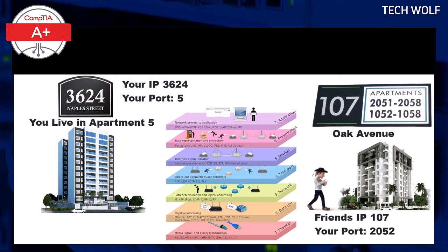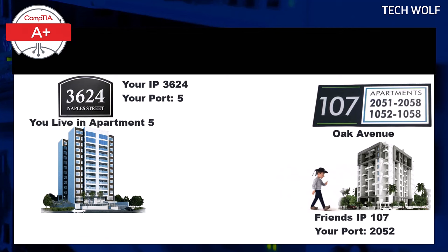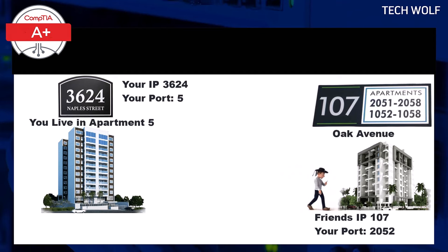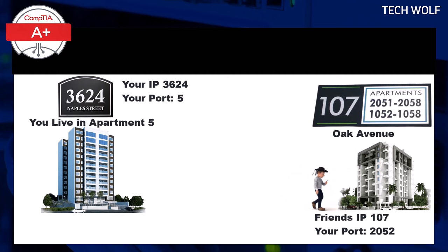When you arrive at your friend's building at 107 Oak Avenue, you need to press the correct doorbell to get in. The doorbell is like a port number for their apartment. Pressing the wrong doorbell — using the wrong port number — could lead you to a different person or no one at all, if there are no apartments or ports with that number. Each doorbell is linked to a different apartment, just like each port number is linked to a specific service or application running on the server.